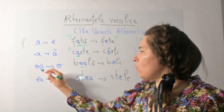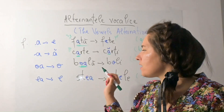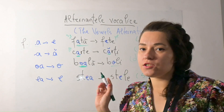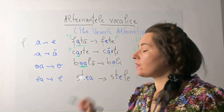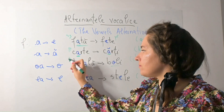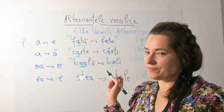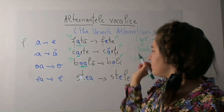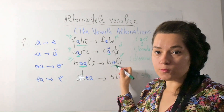We can also have 'oa' in the middle — a vowel and a semivowel — which will change into 'o' at plural. De exemplu: boală (singular) → boli (plural). The 'oa' becomes 'o'.